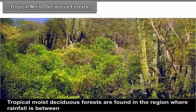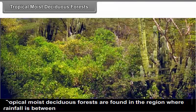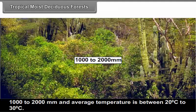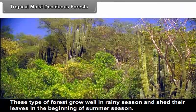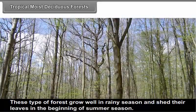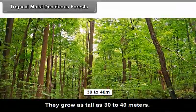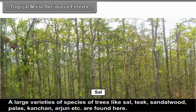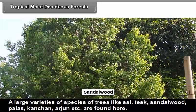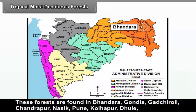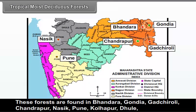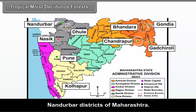Tropical moist deciduous forests are found in regions where rainfall is between 1000 to 2000 mm and average temperature is between 20°C to 30°C. These forests grow well in the rainy season and shed their leaves at the beginning of the summer season. They grow as tall as 30 to 40 meters. A large variety of species like Sal, Teak, Sandalwood, Paras, Kanchan, Arjun, etc. are found here. These forests are found in Bhandara, Gondiya, Gadchiroli, Chandrapur, Nashik, Pune, Kolhapur, Latur, Nandurbar districts of Maharashtra.